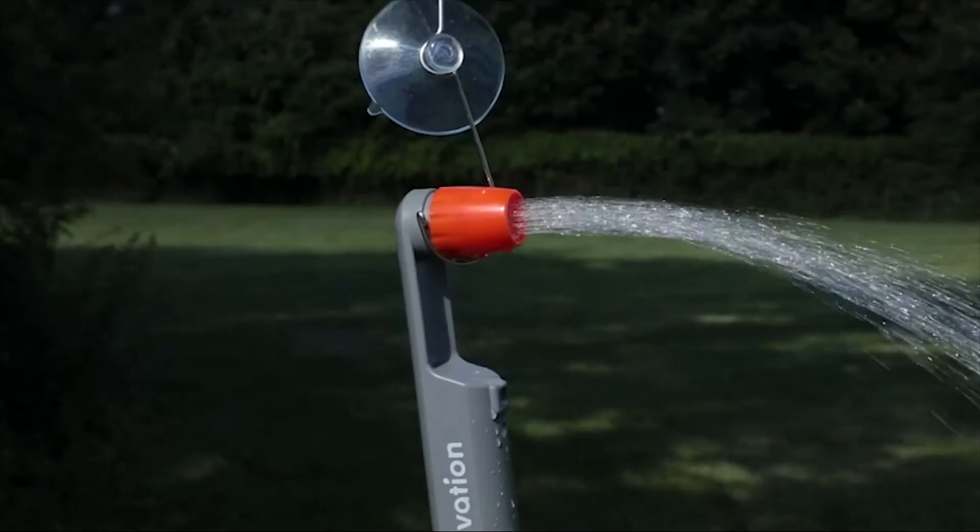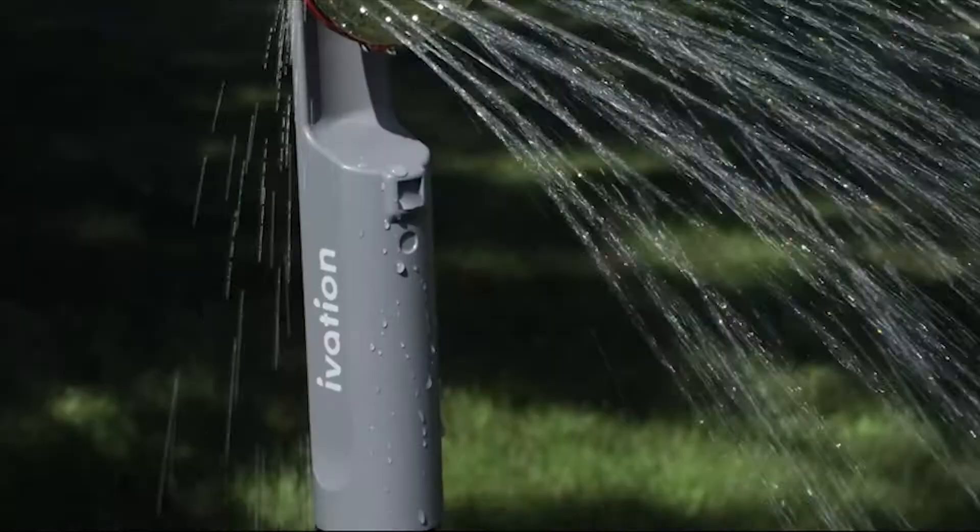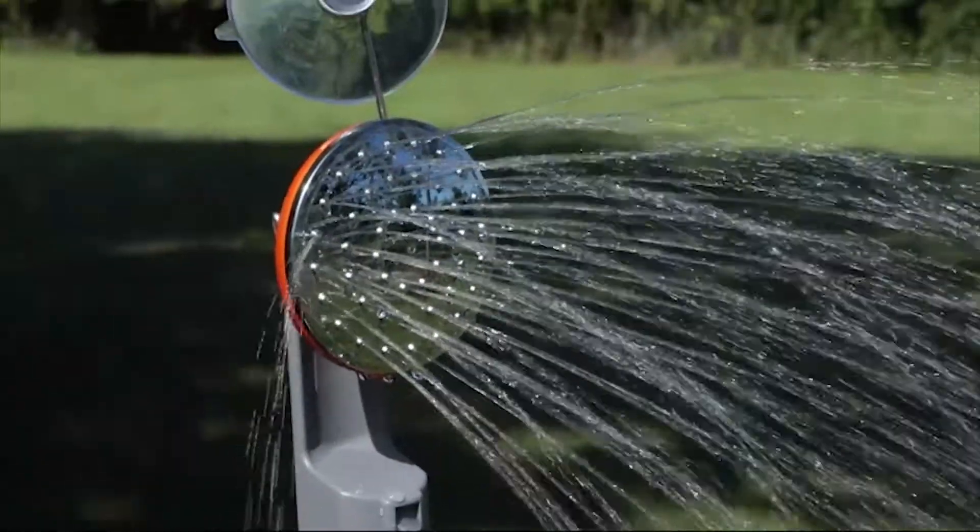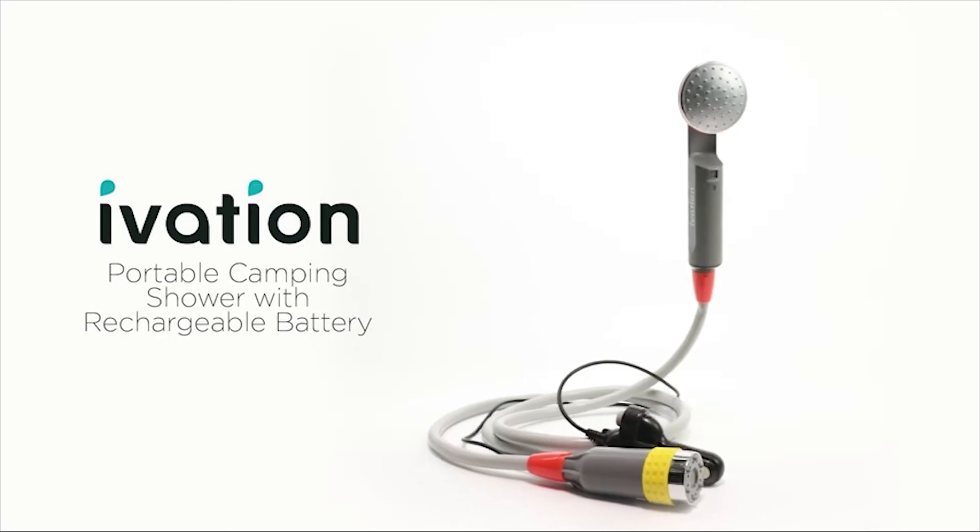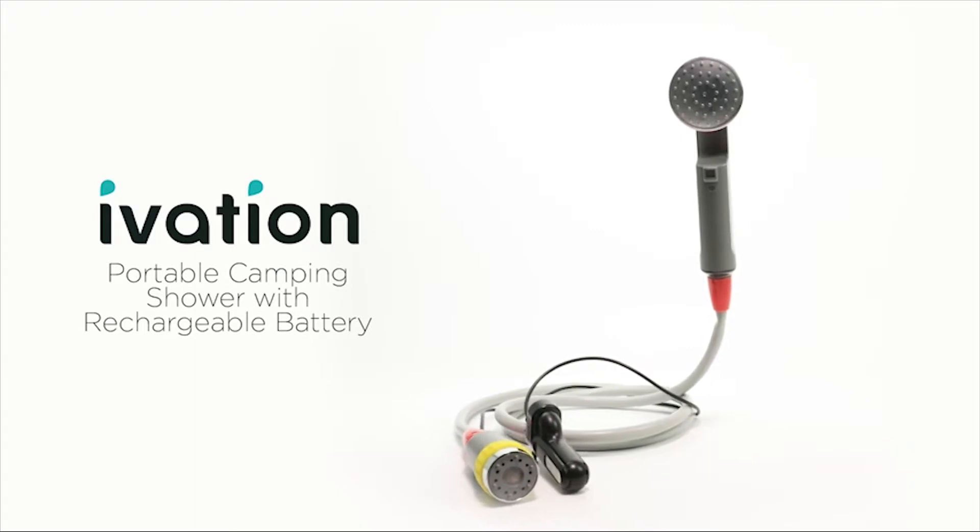The shower comes with two different nozzles for versatile use and the included hanging hook and suction cup lets you set your shower up anywhere. Bring home comfort with you on every outdoor adventure with the iVation Portable Camping Shower with Rechargeable Battery.